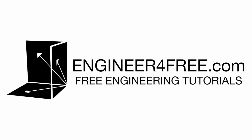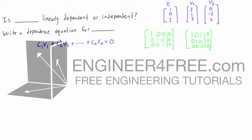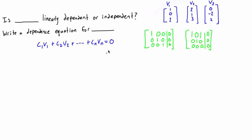Welcome back. In this video we want to write a dependence equation for a set of vectors, but to be able to do that the set of vectors needs to be linearly dependent. So first we want to check if this set of vectors is linearly dependent or independent, and then if it is dependent we want to write the dependence equation for it.